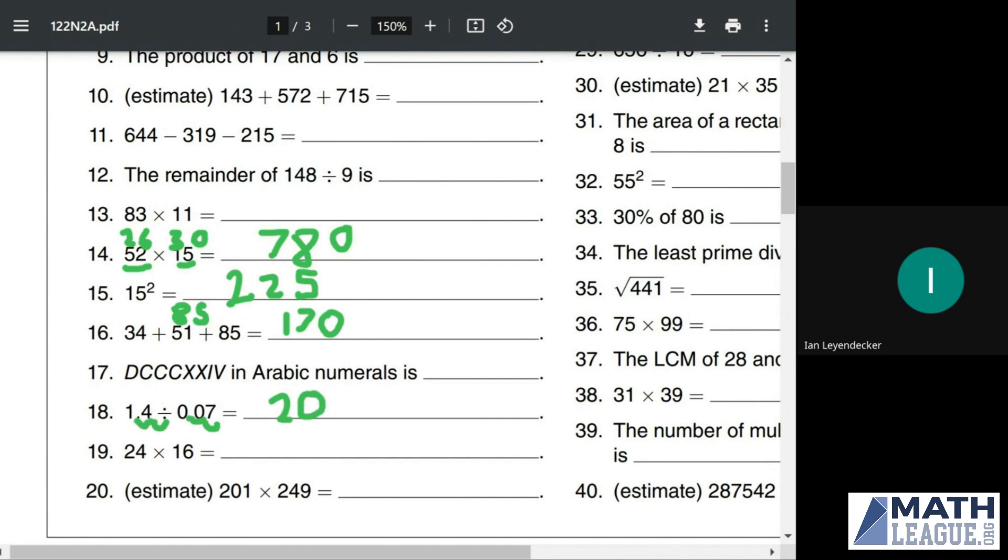Over here we have 24 times 16. We can turn this into 20 plus 4 times 20 minus 4, which we can use our difference of squares theorem, which is going to be 20 squared minus 4 squared. 20 squared is 400. 4 squared is 16, for a total of 384.